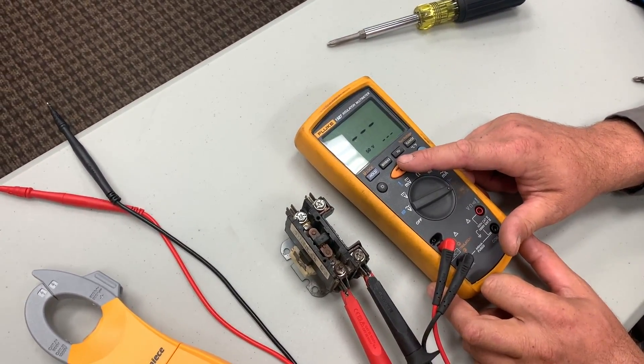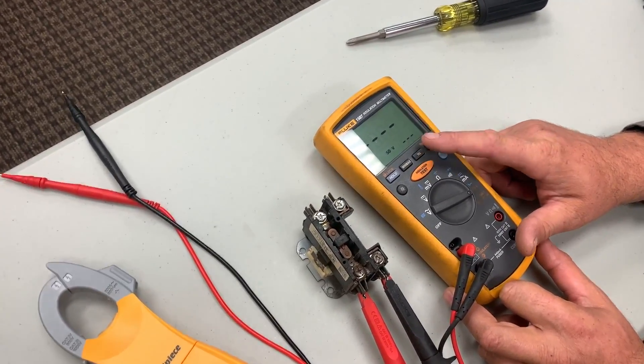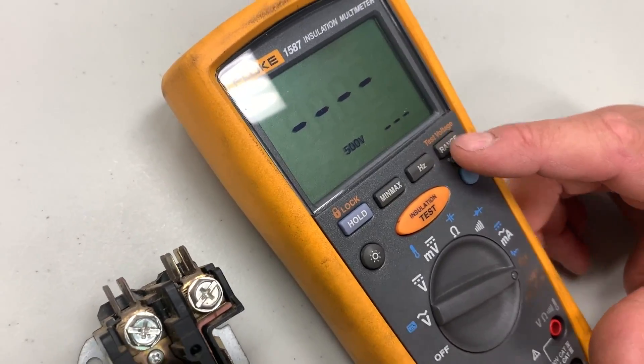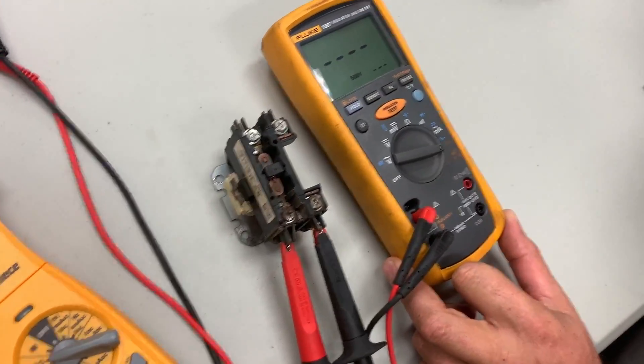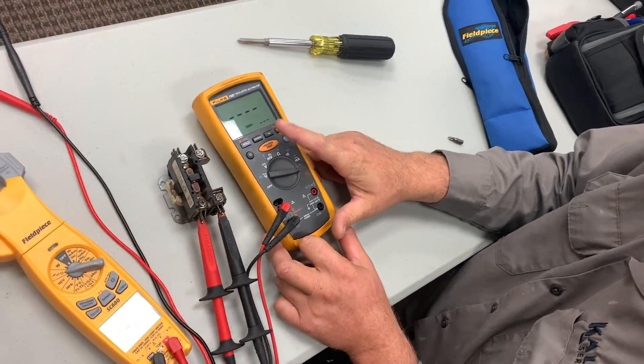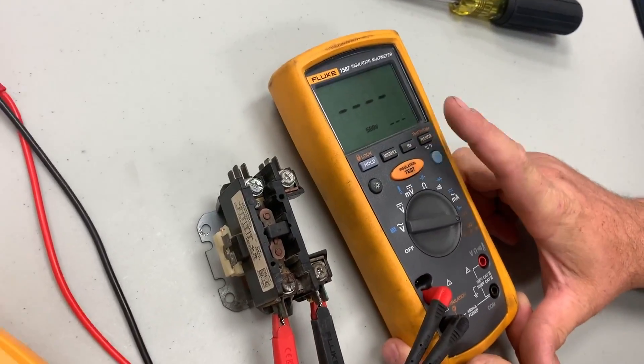So now we're going to switch it to 500 volts, because the peak of 240 - since 240 is the average - would be around 500 volts. So this is what would be your peak on the sine wave, right?